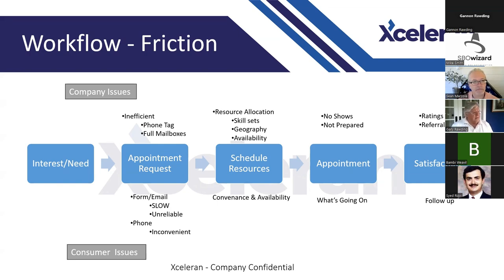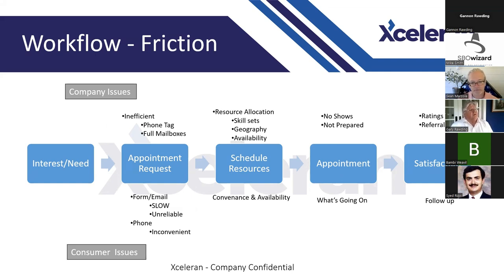Currently, in most cases, the appointment request comes in through one of four steps: the appointment request itself, scheduling resources, the appointment, and getting ready for it. The last step is a satisfaction check. On the top of the slide are some of the basic issues companies deal with in this process — friction points — and on the bottom are consumer issues.